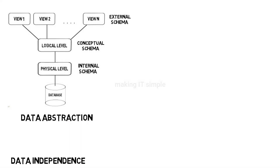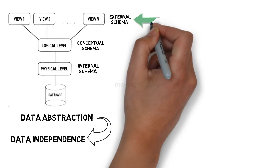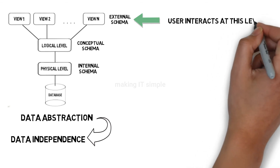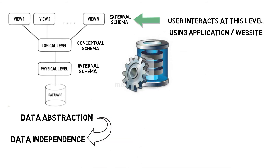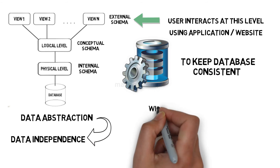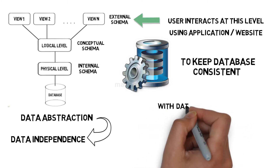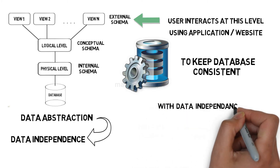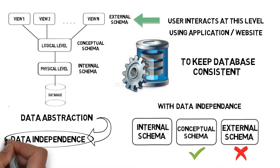The purpose of data abstraction is to achieve data independence. The external schema or view level is where the end user interacts with data using an application or website. If there is no data independence and we change the physical or internal schema, we have to make changes to both remaining schemas. But with data independence, if we change one schema at one level, we don't require changes to higher-level schemas. For example, if we modify the conceptual schema, we don't need to modify the external schema. There are two types of data independence based on the three layers of abstraction.